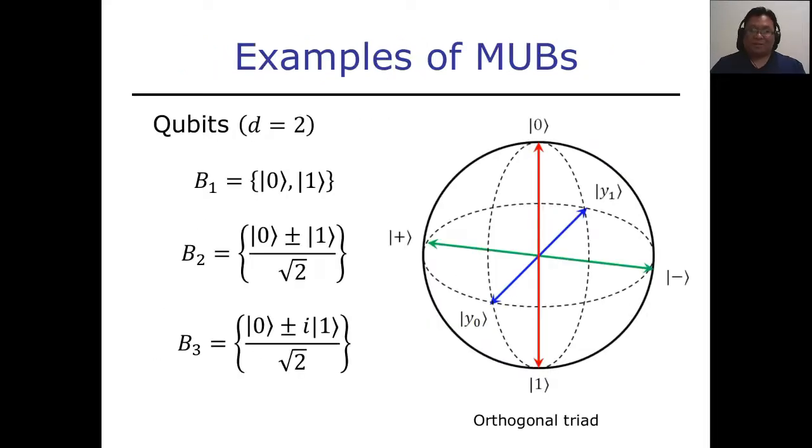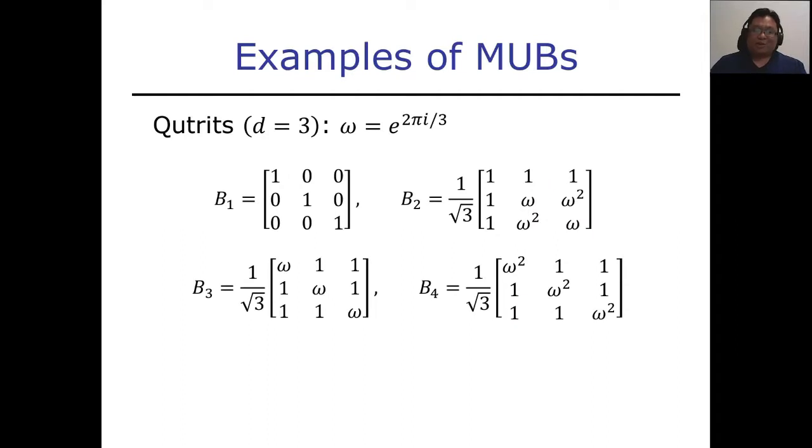An example of a set of MUBs in dimension 2 is the eigenstates of the Pauli operators, which on the Bloch sphere is represented by three orthogonal directions. For qutrits, there's a simple construction. If you take omega to be the root of unity, then we have these four bases that we can construct that will represent a set of four MUBs for qutrits.